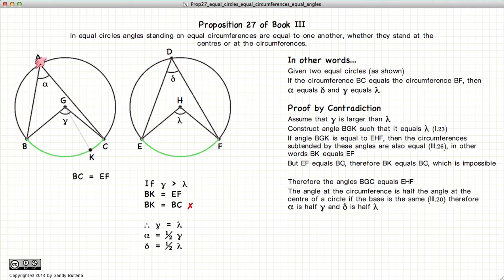Now the angles at the circumference of a circle, in other words alpha, is always half of gamma. And delta would be half of lambda. Well, we've already shown that gamma and lambda are equal. Since gamma and lambda are equal, this also demonstrates that alpha and delta are also equal.